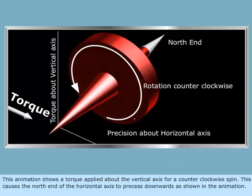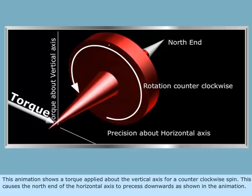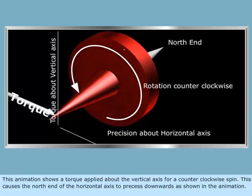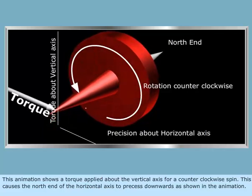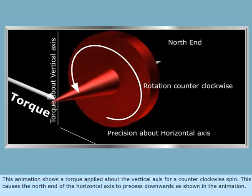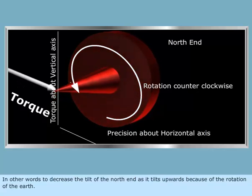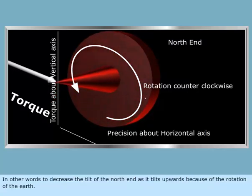This animation shows a torque applied about the vertical axis for a counterclockwise spin. This causes the north end of the horizontal axis to precess downwards as shown in the animation. In other words, to decrease the tilt of the north end as it tilts upwards because of the rotation of the Earth.